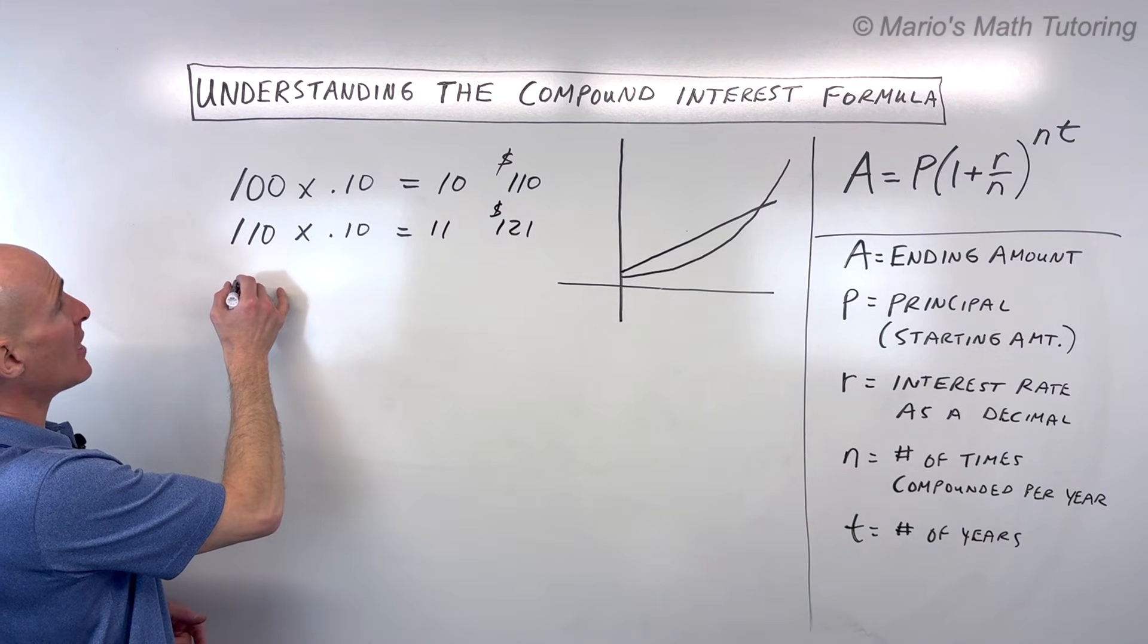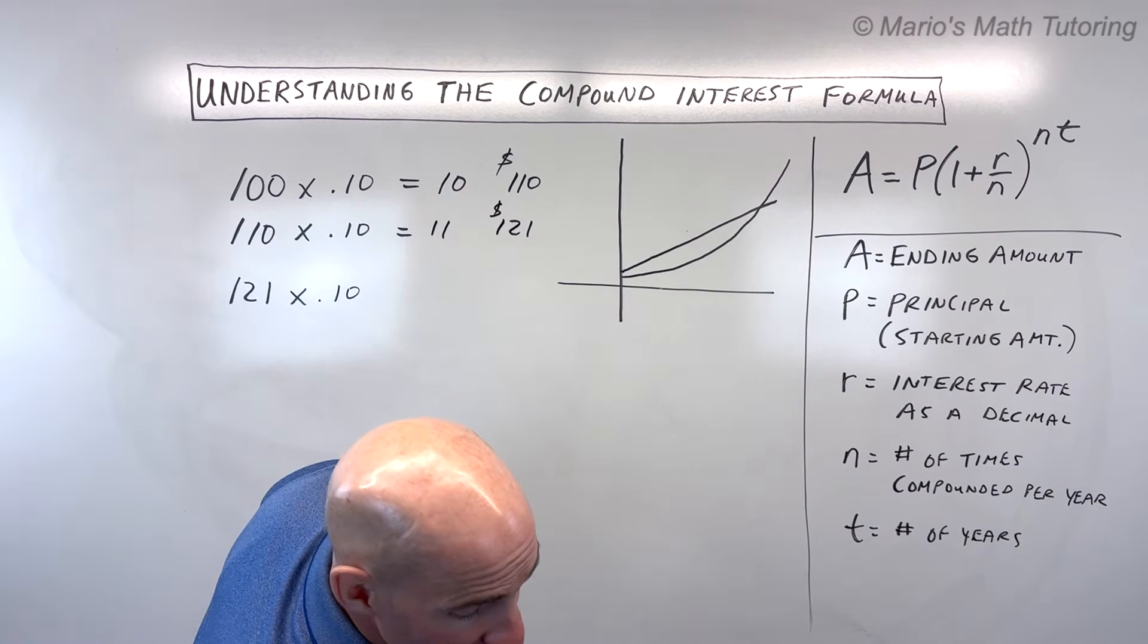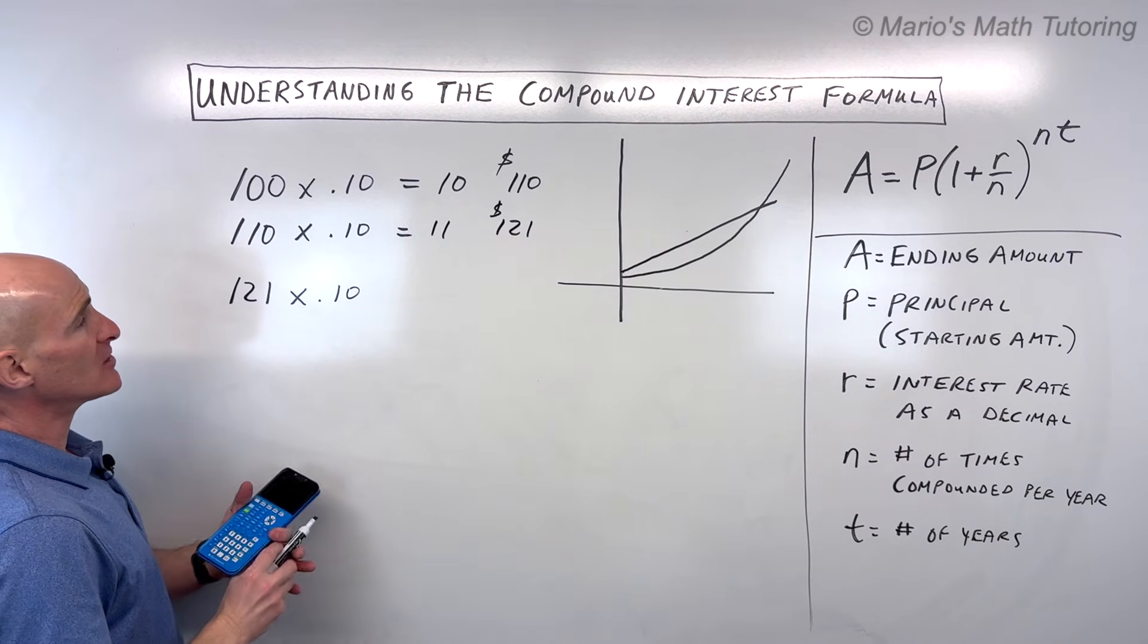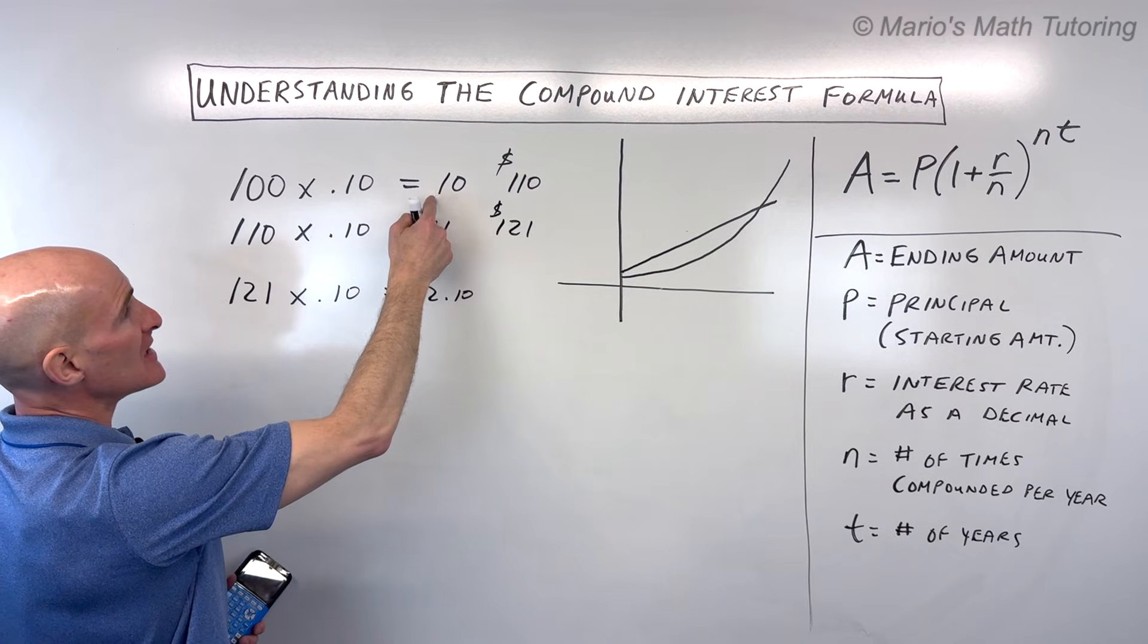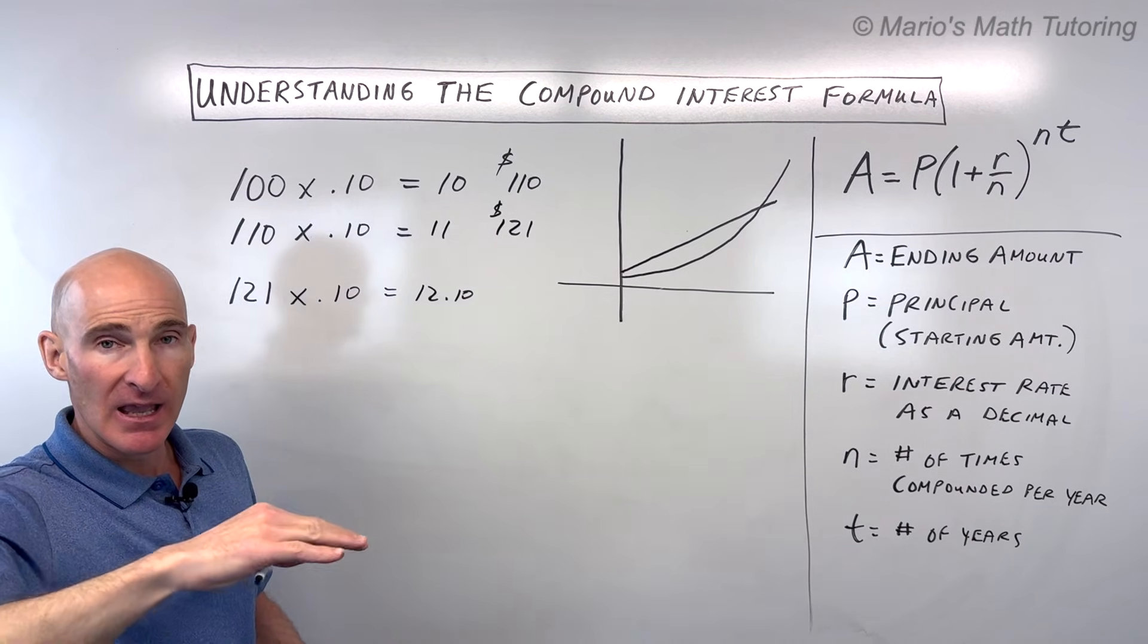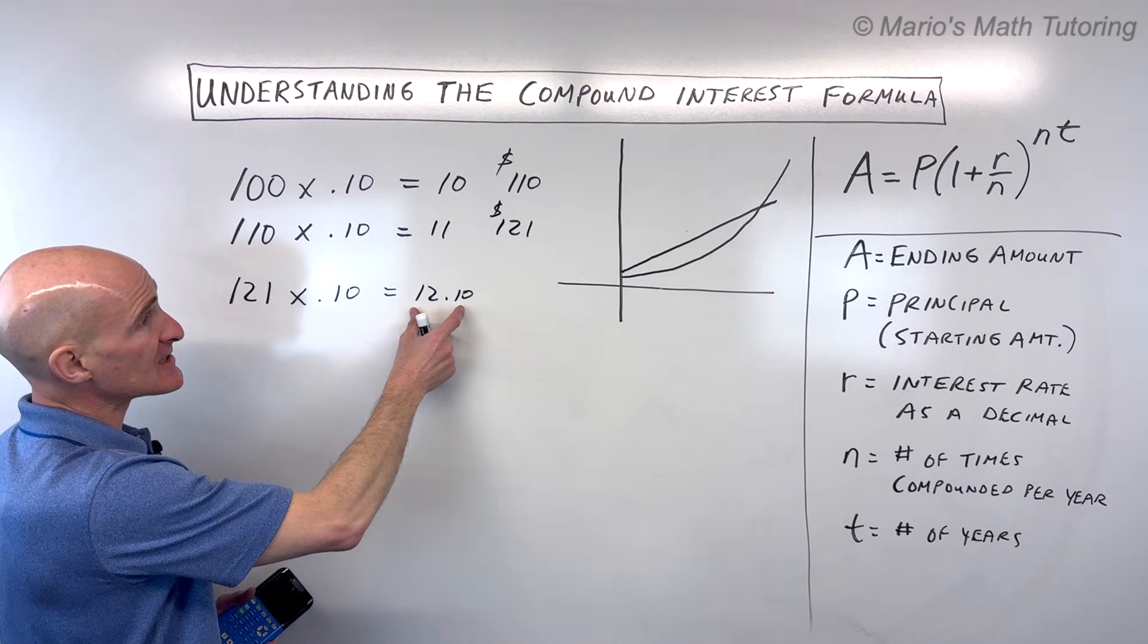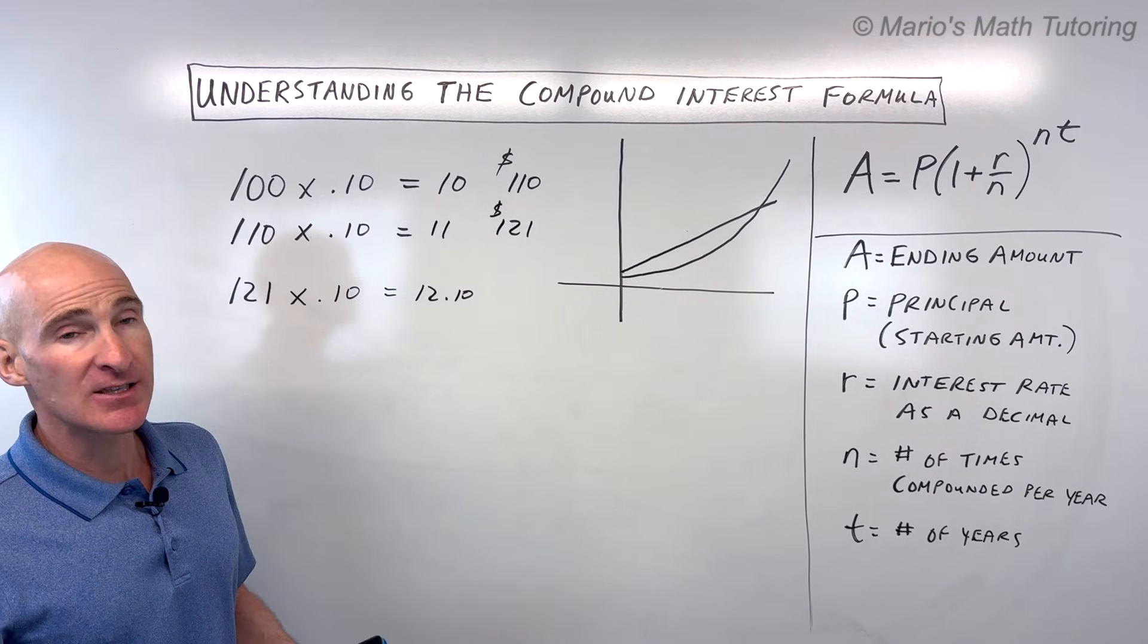And we're going to do it again. So now we take the $121 that we have. We multiply it by 10%. It's going to be $12.10 that you're getting now. So you can see it, it's increasing not just by $1 each time. It went up by $1, now it went up by $1.10. It's going to keep going up by more and more each time. But the reason that's happening is because your initial amount is now increasing.